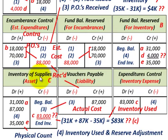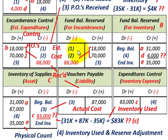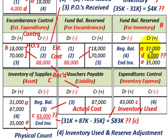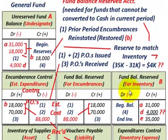Let's start with our inventory supplies and look at our beginning balances and see how those are tied into our reserve accounts. We'll say our beginning balance is $31,000 worth of inventory supplies — a debit amount of $31,000. Now for our fund balance reserved for inventories, that reserved account has to match our inventory supplies account, so we have a credit of $31,000.